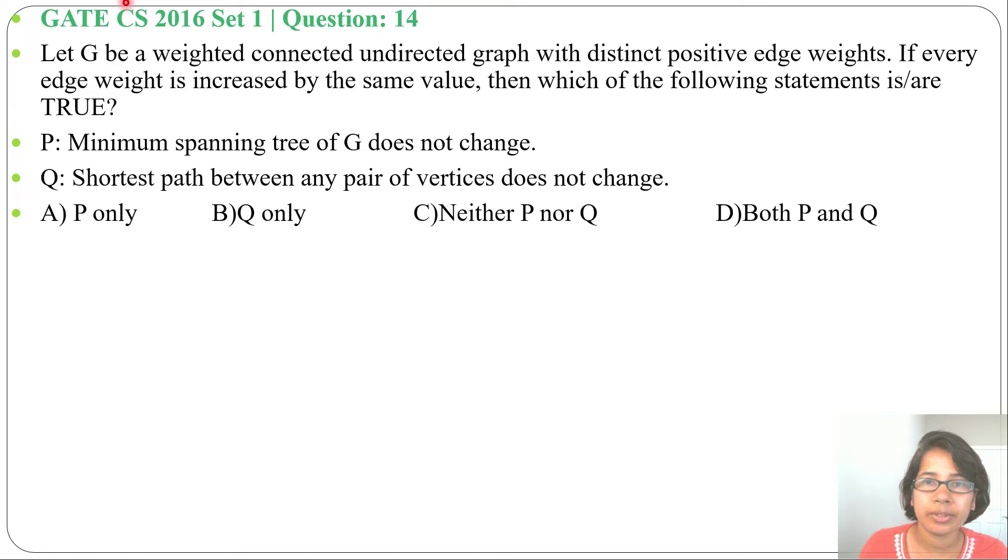Hi, let's solve one previous question on greedy technique. This question was asked in GATE CS 2016 Set 1, Question Number 14. Let G be a weighted connected undirected graph with distinct positive edge weights. If every edge weight is increased by the same value, then which of the following statements are true? Two statements are given and four options are given.